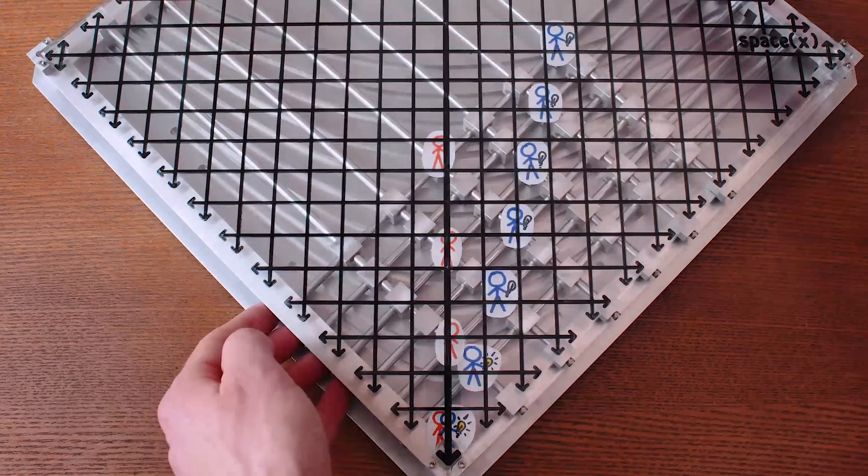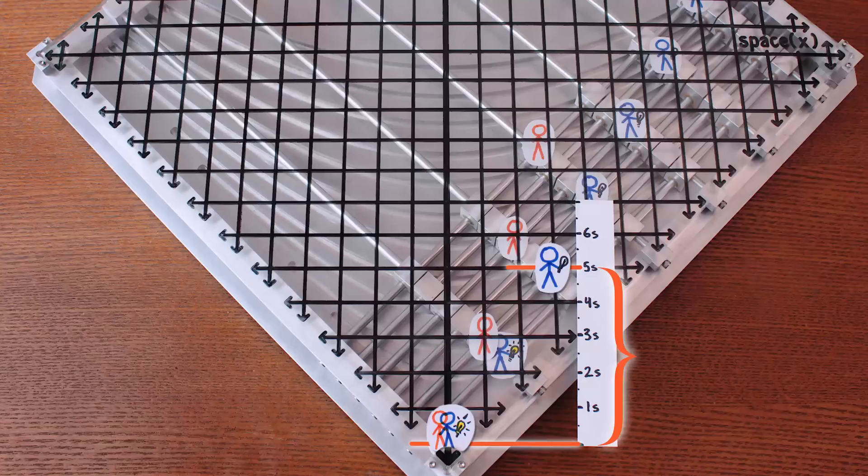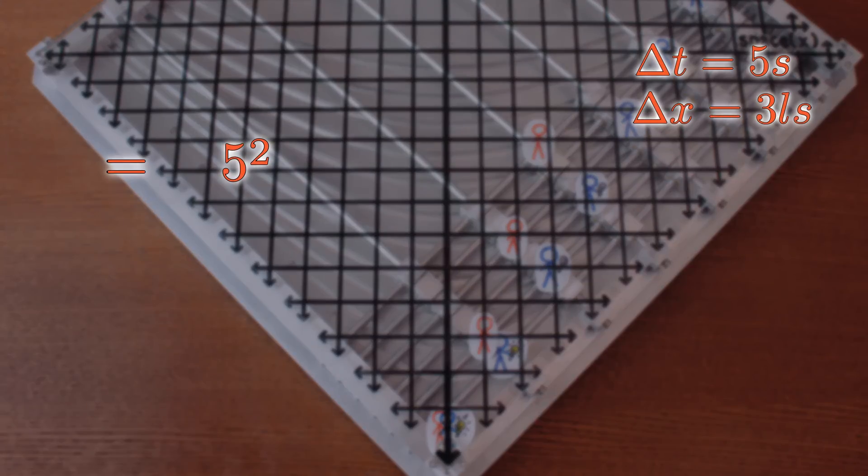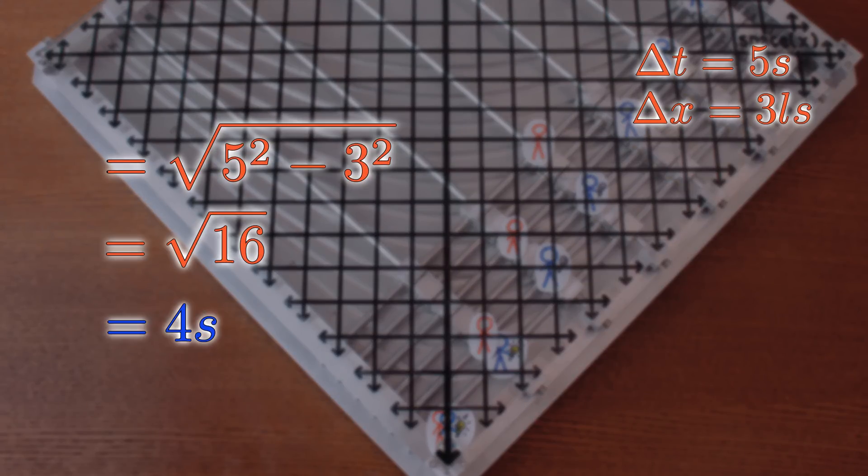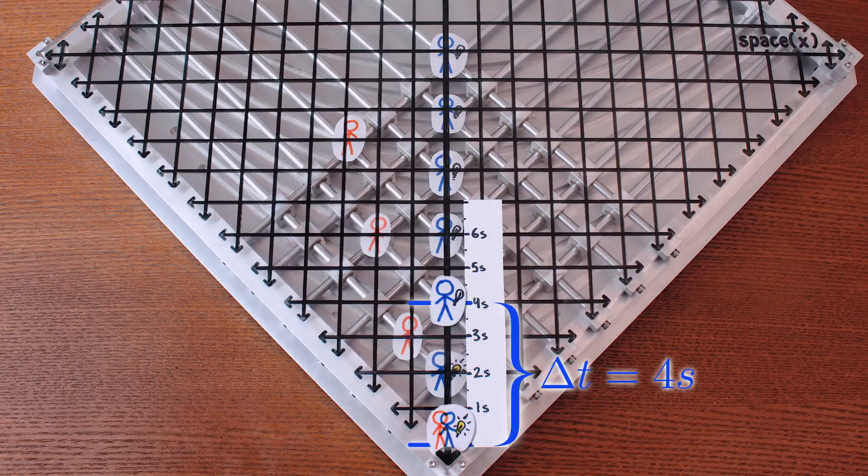And it works for any moving reference frame. Here, from a perspective in which I'm moving 60% the speed of light to the right, I left my light bulb on for 5 seconds, during which time I moved 3 light seconds to the right. Square the time, subtract the distance squared, take the square root, and again we've got 4 seconds. The true, proper duration of time for which my light bulb was on.